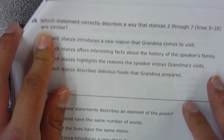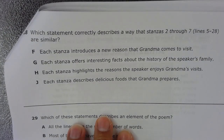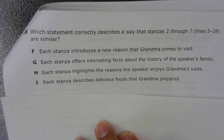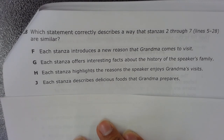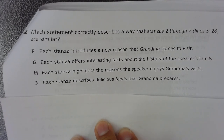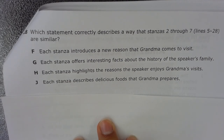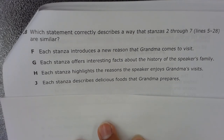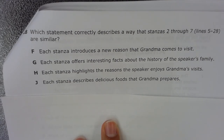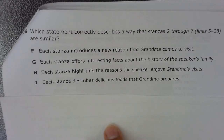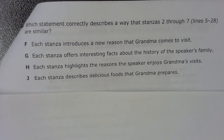Number 28. Which statement correctly describes a way that stanzas 2 through 7, lines 5 through 28, are similar? A. Each stanza introduces a new reason that Grandma comes to visit. B. Each stanza offers interesting facts about the history of the speaker's family. H. Each stanza highlights the reasons the speaker enjoys Grandma's visits. J. Each stanza describes delicious foods that Grandma prepares.